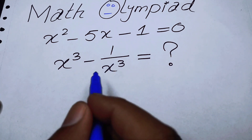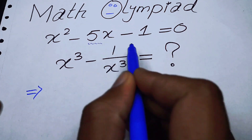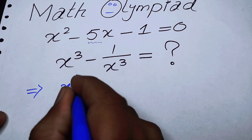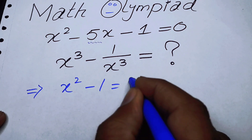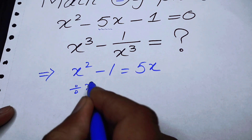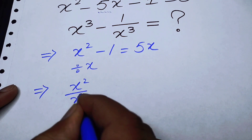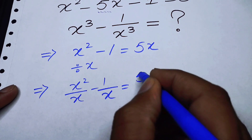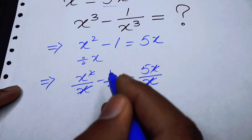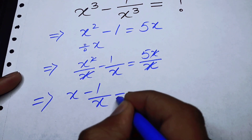The very first thing we are going to do is take the term minus 5x to the right hand side. The given equation will become x square minus 1 is equal to 5x. After that I will divide both sides by x and we will get x minus 1 over x is equal to 5.